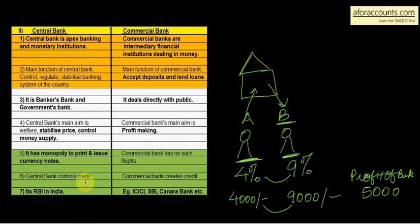Who creates credit? Commercial bank. Who is the government's bank or the banker's bank? Central bank. And which bank directly deals with public? Commercial bank. Commercial bank ka main aim kya hai? Profit making. Jabki central bank ka main aim kya hai? Welfare, stabilized price and control money supply. Print aur issue currency notes kaun karta hai? Central bank. Commercial bank ke paas aisa koi right nahi hai.